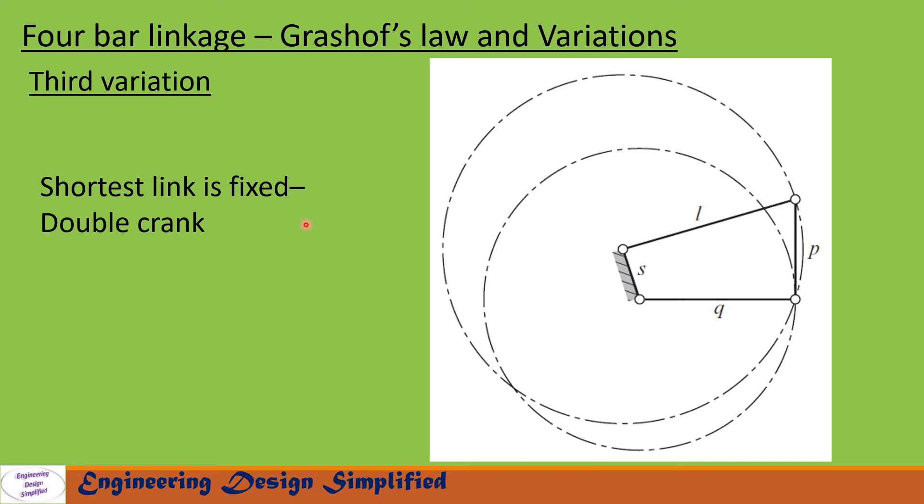We get the third variation when we fix the shortest link. So if the shortest link is fixed, then the links L and Q will make a full 360 degree rotation. So this is called a double crank mechanism.